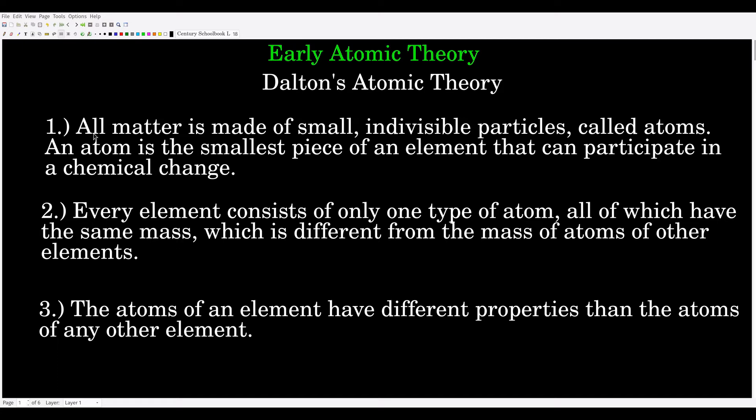Here are the parts of Dalton's atomic theory, in my own words, but essentially what he said. First, all matter is made up of really small particles called atoms. An atom is the smallest piece of an element that can participate in a chemical change — that is, a chemical reaction. An element refers to the types of atoms that exist, which we see in the periodic table.